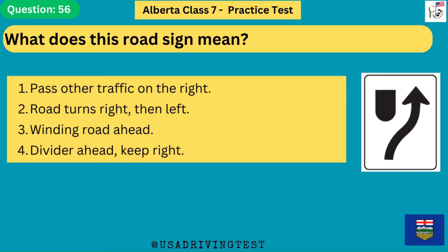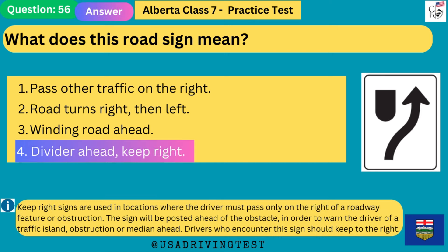What does this road sign mean? 1. Pass other traffic on the right. 2. Road turns right, then left. 3. Winding road ahead. 4. Divider ahead, keep right. The answer is 4: divider ahead, keep right. Keep right signs are used in locations where the driver must pass only on the right of a roadway feature or obstruction. The sign is posted ahead of the obstacle to warn the driver of a traffic island, obstruction or median ahead. Drivers who encounter this sign should keep to the right.